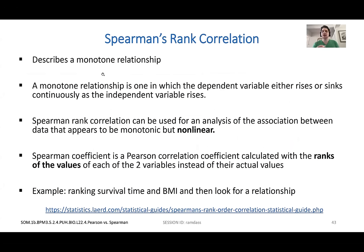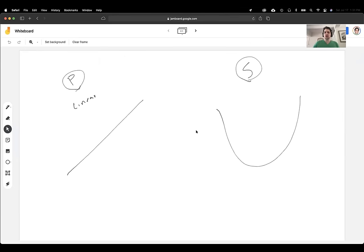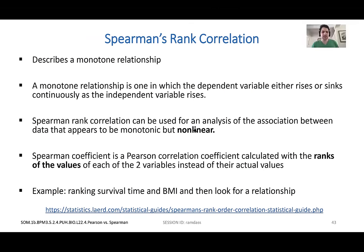For Spearman's, we're looking at non-linear things. Two variables that don't necessarily fall in the same line, but you're looking for some sort of relationship. The key thing is in the stem they would put some sort of non-linear relationship. With Pearson's it's perfectly linear; with Spearman's, the relationship may curve — there's still a relationship and you can draw a concurrent line through it, but it's not linear. Look for linear versus non-linear relationship to determine which to use.